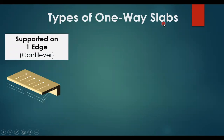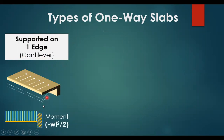Types of one-way slabs based on supports: it can be supported on one edge, and this will be the case of a cantilever. It is a special case of one-way slab because loads are going only to one direction and it is supported on one beam. You should be careful when you calculate the moment because for a cantilever under uniform load, the maximum bending moment will be a negative moment of WL squared over two.